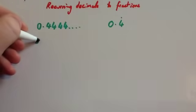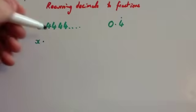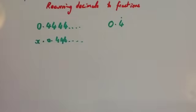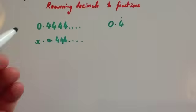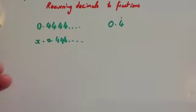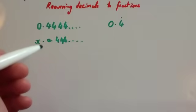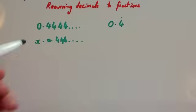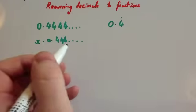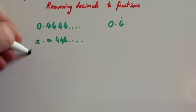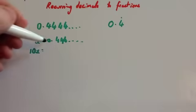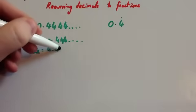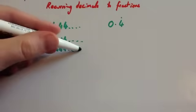First thing: let x equal the recurring decimal you've been given, so x = 0.444... Now, I want to get another equation so that I can take the two away from each other and the recurring bits will cancel out. If I times this by 10, then 10x = 4.4 recurring, so 4.4444...